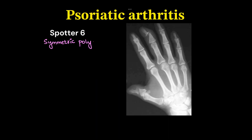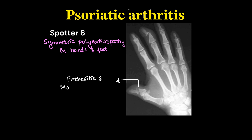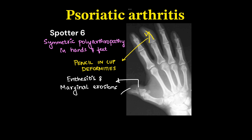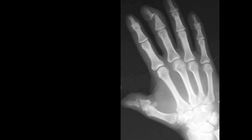This is a case of psoriatic arthritis, showing symmetrical polyarthropathy in hands and feet. We can see enthesitis and marginal erosions, which later on give rise to pencil-in-cup deformity. There can also be soft tissue edema of a finger causing sausage digit or dactylitis.